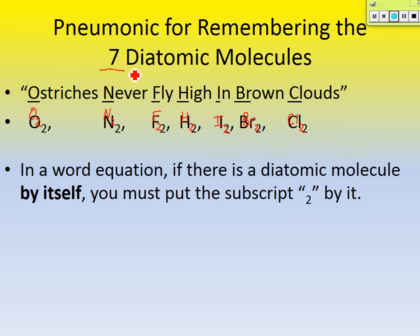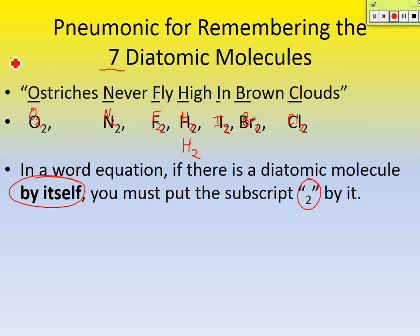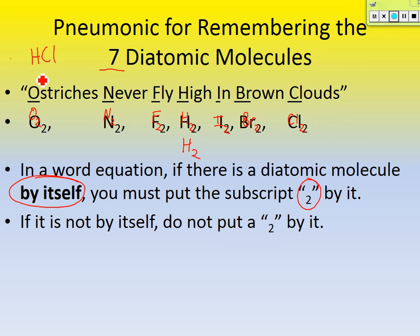In a word equation, if there's a diatomic molecule by itself — circle 'by itself' — you must put a subscript 2 by it. So if hydrogen is just by itself, you put H with a little 2 as a subscript. But what if it's not by itself? If it's hydrogen chloride — HCl — do you put a little 2? No. Only if those seven diatomic molecules are by themselves do you put a 2.